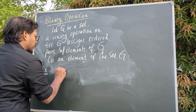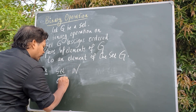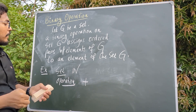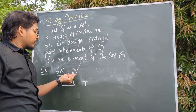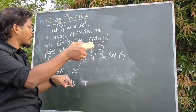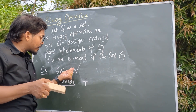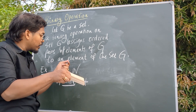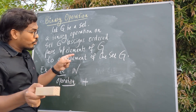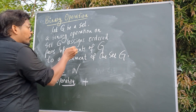For example, suppose the set is the set of natural numbers and the operation is addition. Addition takes two elements of the set of natural numbers, adds them, operates on those two elements, and gives another element of the set. So a binary operation takes two elements of that set, combines them, operates on them, and produces another element of that set. Remember, binary operation takes two elements from that set and those two elements are ordered pairs.